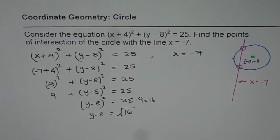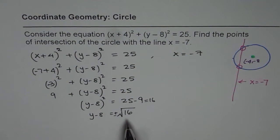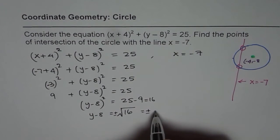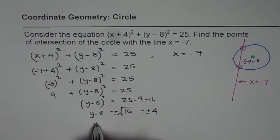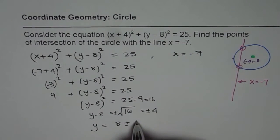Remember, whenever you take a square root, you should include plus and minus. Since (+4)² or (-4)² both equal 16, we get ±4. So y = 8 ± 4.